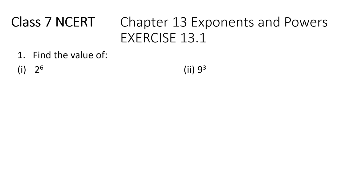Find the value of 2 raised to the power of 6. This number is given in the exponential form where 2 is the base and 6 is the exponent. The exponent tells you how many times you need to multiply the base. So we write it as 2 times 2 times 2 times 2 times 2 times 2 — that means we write it 6 times. 2 is multiplied 6 times and then we multiply.